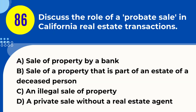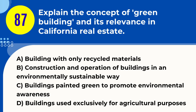Question 86. Discuss the role of a probate sale in California real estate transactions. A. Sale of property by a bank. B. Sale of a property that is part of an estate of a deceased person. C. An illegal sale of property. D. A private sale without a real estate agent. Answer: B. Explanation. A probate sale in California real estate occurs when a property is sold as part of the estate of a deceased person. This type of sale is typically overseen by the probate court and may involve specific legal procedures and potential court approval, especially if the estate is subject to probate proceedings.